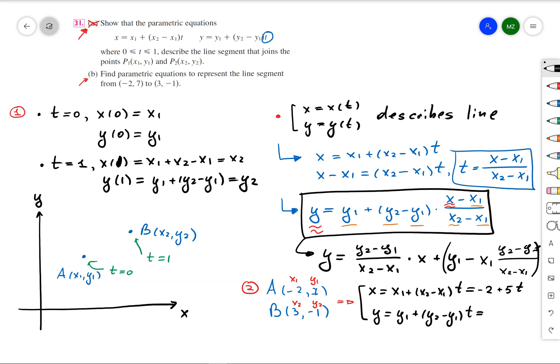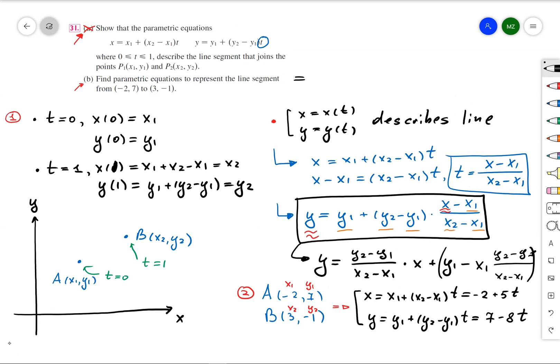And you can see that x1 is -2, y1 is 7, and x2 is 3 and y2 is -1. Or in other words, if I'm going to plug in those numbers into my parametric equation, I'm going to obtain that x equals -2 plus 5t and y equals 7 minus 8t.